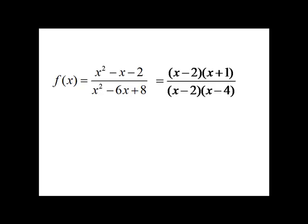Now, in looking at this function, we see that 2 and 4 make a 0 in the denominator, so our domain is negative infinity to 2, 2 to 4, and 4 to infinity, because we must exclude 2 and 4.